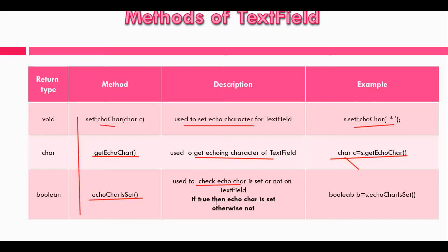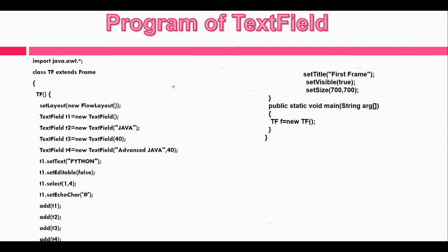Now let's see the demonstrative program for TextField. The first line is the import line in which the AWT package is imported — it is used for the Frame and TextField classes. This is our class name which extends Frame. Here we set the layout as FlowLayout. Here we create the first TextField with object t1. Here we create a second TextField with initial string 'Java'. Here the third TextField is with width 40, and the fourth TextField is with an initial string and width 40.